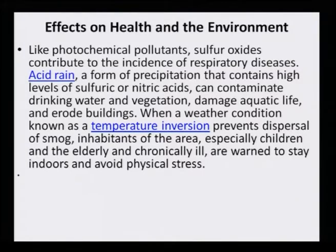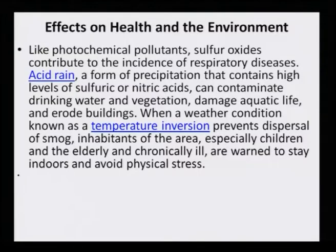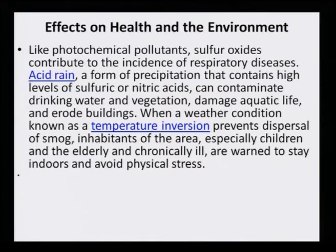Air pollution has a very drastic and bad effect on not only human beings, but also plants and other animals. Photochemical pollutants and sulphur dioxide contribute to incidence of respiratory diseases. Acid rain — a form of precipitation that combines high levels of sulphuric or nitric acids — can contaminate drinking water and vegetation, damage aquatic life, and erode buildings. When a temperature inversion prevents dispersal of smoke, inhabitants, especially children, the elderly, and the chronically ill, are warned to stay indoors to avoid physical stress from inhaling these bad gases.